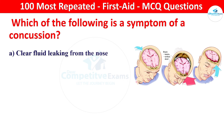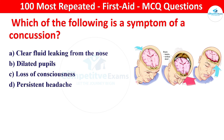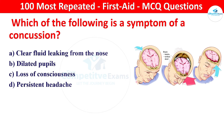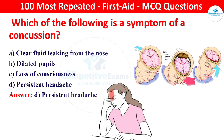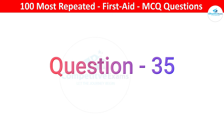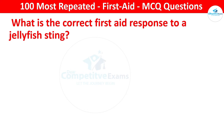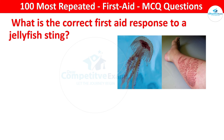Next question: which of the following is a symptom of concussion? Options: clear fluid leaking from the nose, dilated pupils, loss of consciousness, or persistent headache. The right answer is persistent headache. Persistent headache is a common symptom of a concussion, which may occur after a head injury.